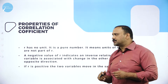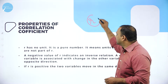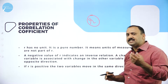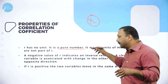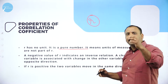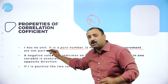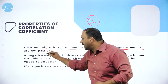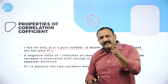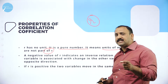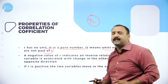The properties of the correlation coefficient: r has no unit. The value of r doesn't have a unit like kilograms, meters, or seconds — it is a pure number. Units of measurement are not a part of r, so at no point are we measuring r in physical terms; it is simply a measure of the coefficient of correlation.